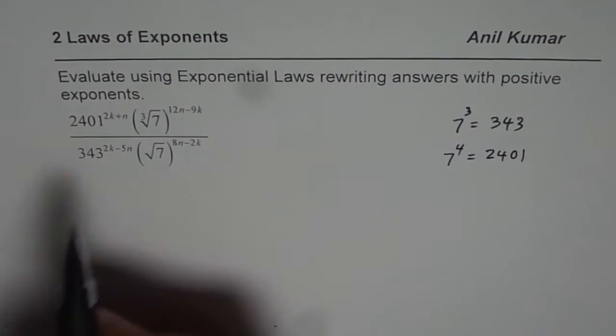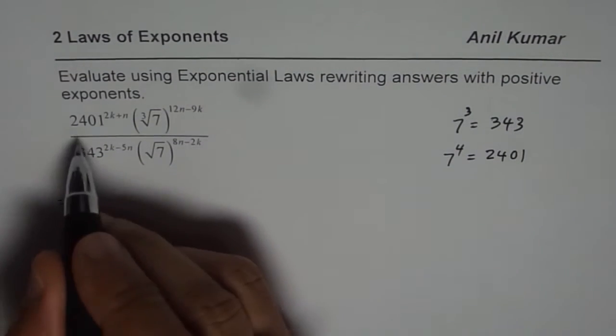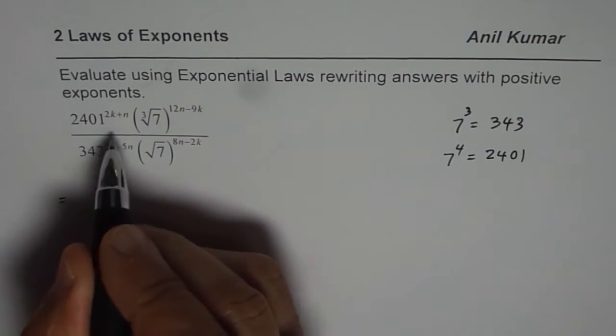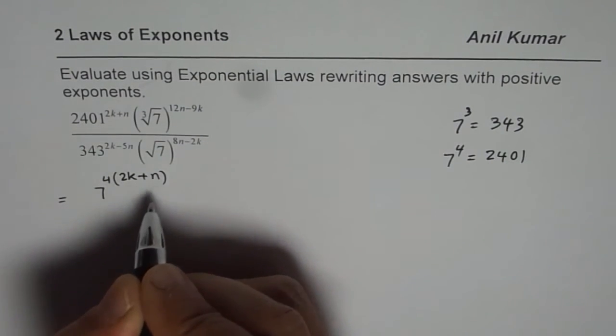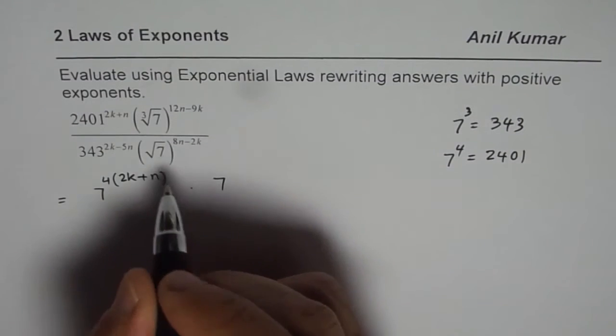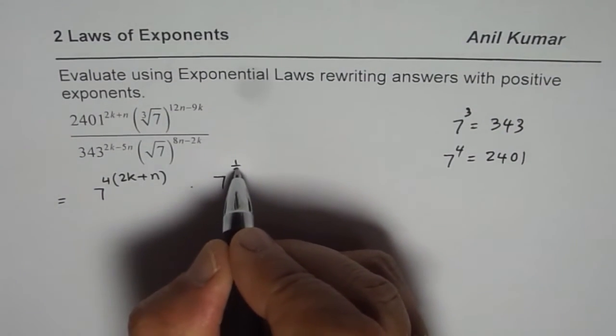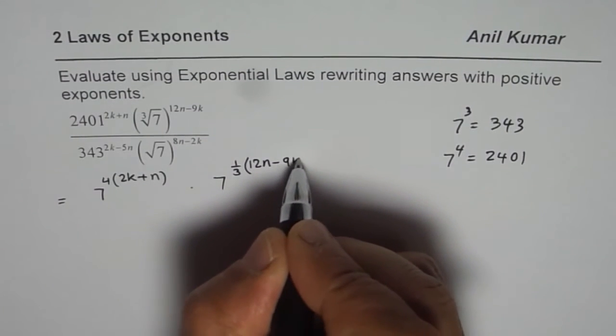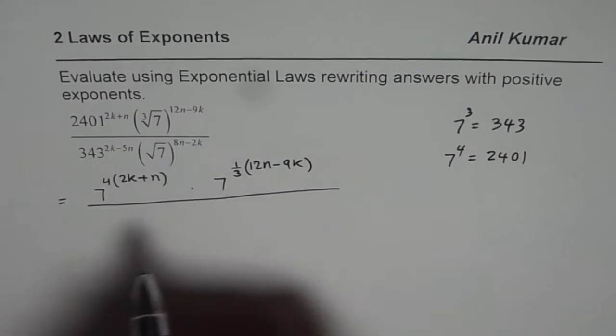Now we are going to write these expressions as powers of 7. So we can write 2401 as 7 to the power of 4 and we already have here 2k plus n. So we will put that in brackets, 2k plus n, correct? In the numerator, the next term we have is 7 to the power of 1 over 3 of 12n minus 9k. That is how you can write and simplify your expression.